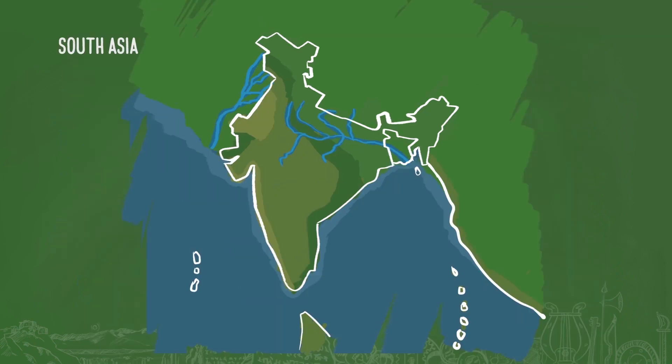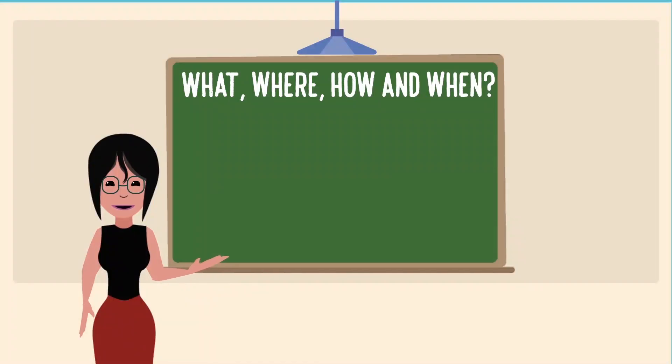This is the map of South Asia. Sometimes it is also called the subcontinent. Although it is smaller than a continent, it is very big in itself and it is separated from the rest of Asia by seas, hills and mountains.